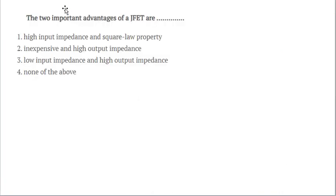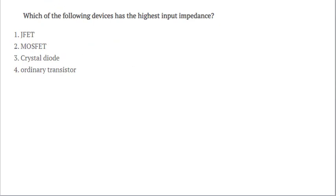Let's start the questions. Question number first: The two important advantages of JFET is first it has high input impedance and second is the square law property. Therefore, option A is the correct answer. Which of the following devices has the highest input impedance? Only MOSFET. MOSFET has the highest input impedance that is around in megaohms.